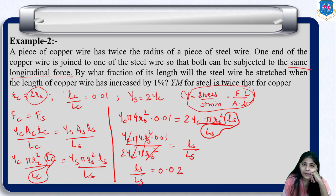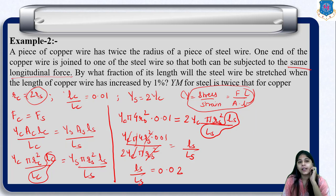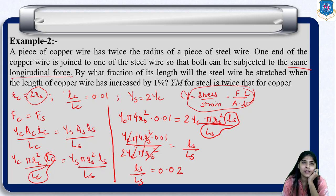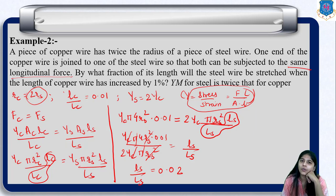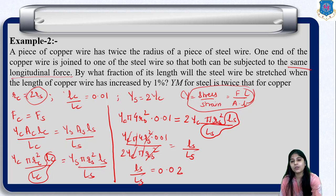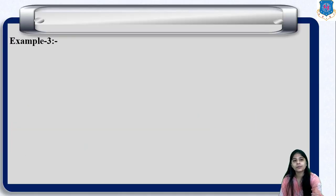So in this way, the steel wire will be stretched by 2% when the length of the copper wire is increased by 1%. Now let us go to another example.